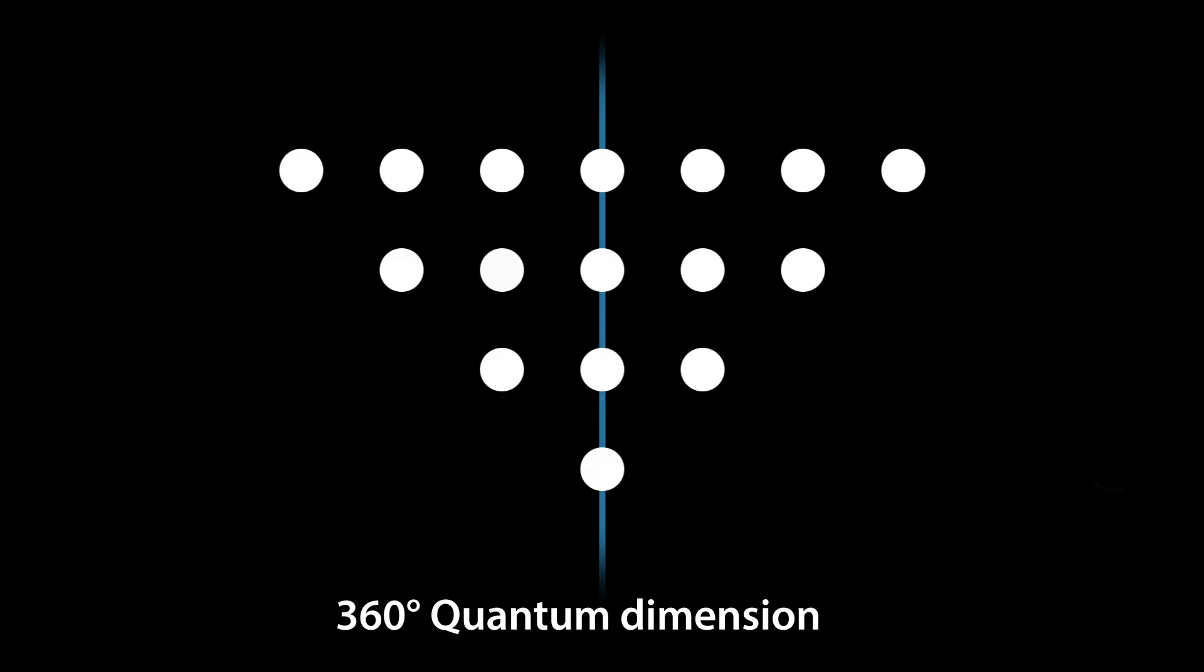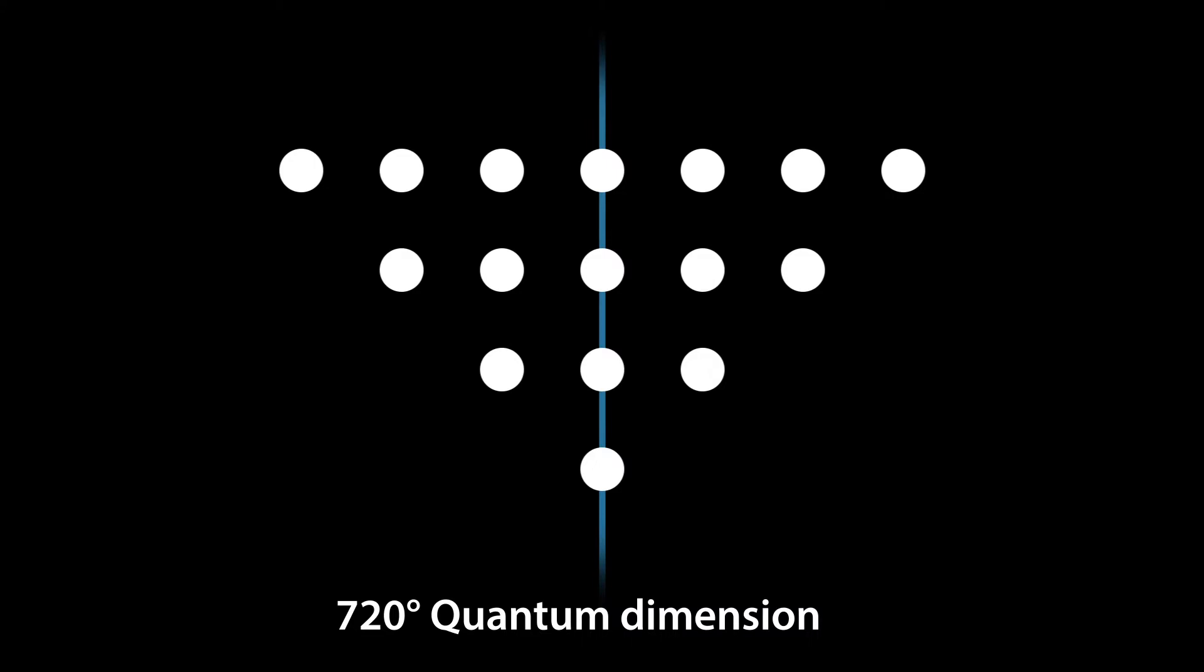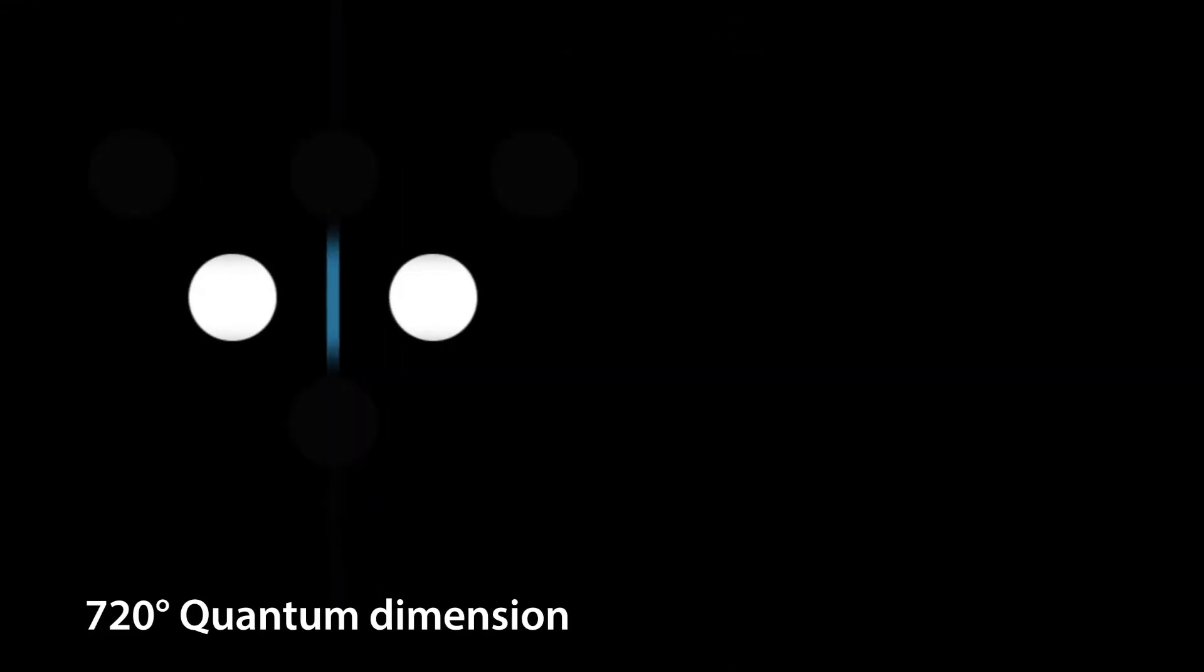What happens, however, if we go from the 360-degree world to the 720-degree world? That is, to the three-dimensional sphere in four dimensions. Now spin states arise.